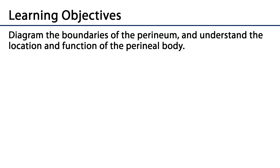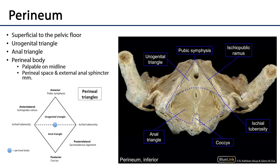In this particular video we're going to discuss the boundaries of the perineum and understand the location and function of the perineal body. The perineum is a diamond-shaped region that sits superficial to the pelvic floor — those muscles of the pelvic diaphragm. It's best construed as two non-coplanar triangles; anteriorly we will have a urogenital triangle, which has anterolateral borders of ischiopubic rami.